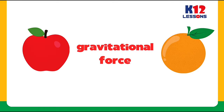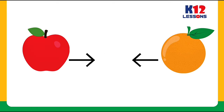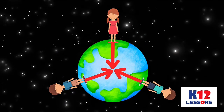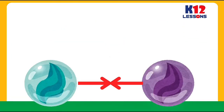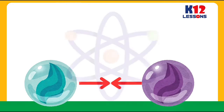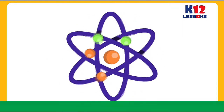Gravity is a force of attraction that exists between any two objects. This gravitational force between two objects acts towards each other — the two objects attract or pull one another. There is a gravitational force between Earth and us, between two people, between two marbles, and even between two atoms or particles.